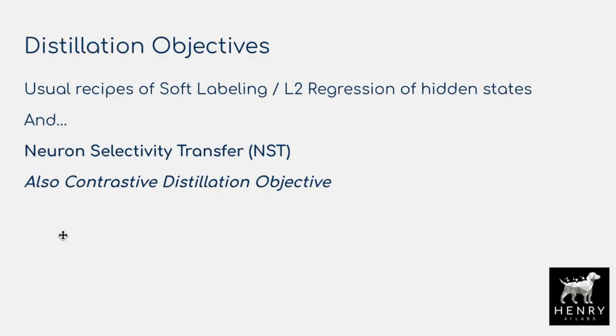Now that we have a teacher model — specifically the language modeling part trained with visual supervision via the hinge loss — we want to distill these representations to a student language model. The student model in the distillation objective is only the language modeling part. The distillation objectives include the usual soft labeling, where the teacher produces a distribution rather than one-hot encoding for masked language modeling, plus an L2 regression comparing hidden state vectors. They also use neuron selectivity transfer and contrastive representation distillation.